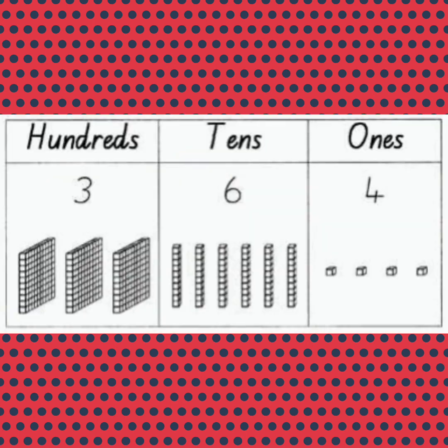Coming to the next one. 4 ones, 6 tens, and 3 hundreds. How to read this? 364.